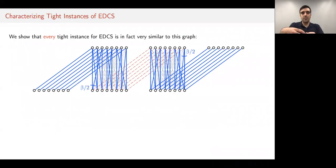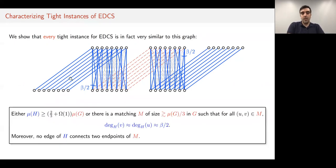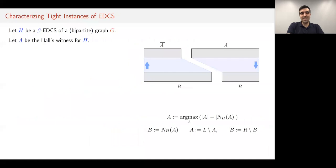Our first result gives a characterization of tight instances for EDCS. We show that every tight instance for EDCS is in fact very similar to the example just shown. We prove that either the EDCS includes a strictly better than two-thirds approximation, or there is a missing matching M of size at least one-third of μ(G), such that for every edge of this missing matching, the degrees of its endpoints inside H are very close to β/2.